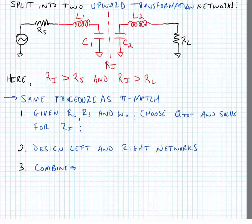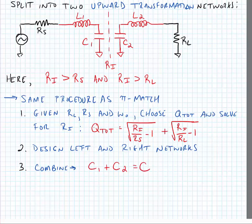The matching procedure for the T network is the same as for the pi match. We've broken the problem into two impedance matching problems solved from the left and right sides. Given a load resistance, a source resistance, and a frequency of operation, we choose the total quality factor and solve for RI. Q_total equals the square root of (RI over RS minus 1) plus the square root of (RI over RL minus 1). When done, we combine C1 and C2 in parallel, so C1 plus C2 equals C.